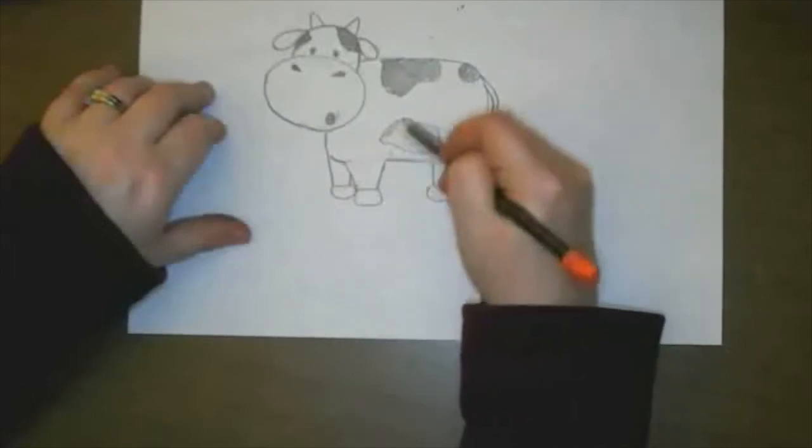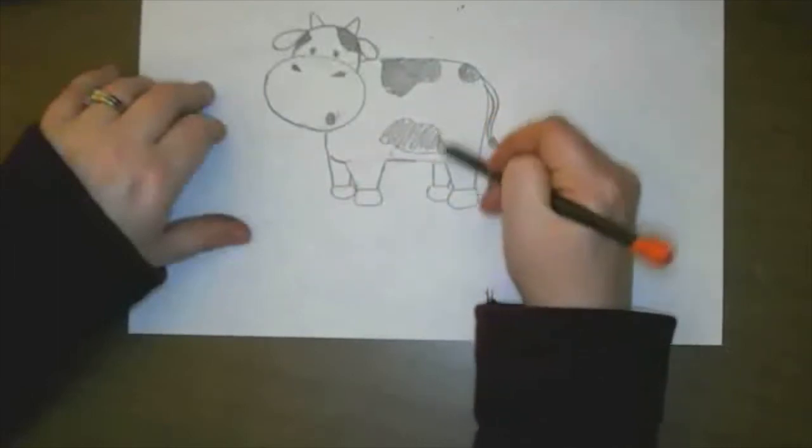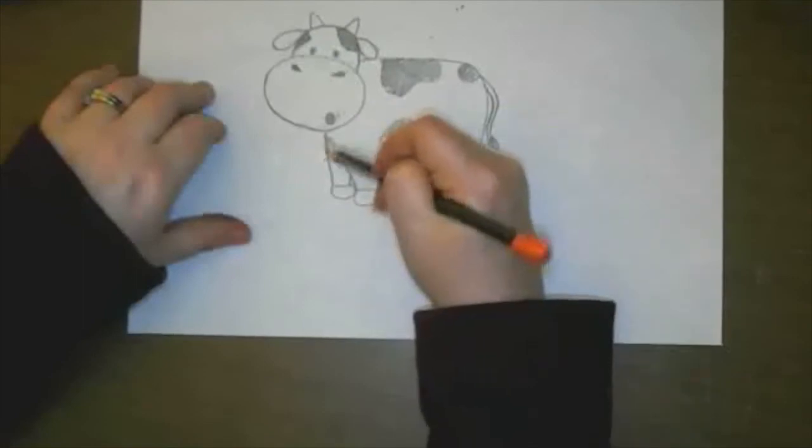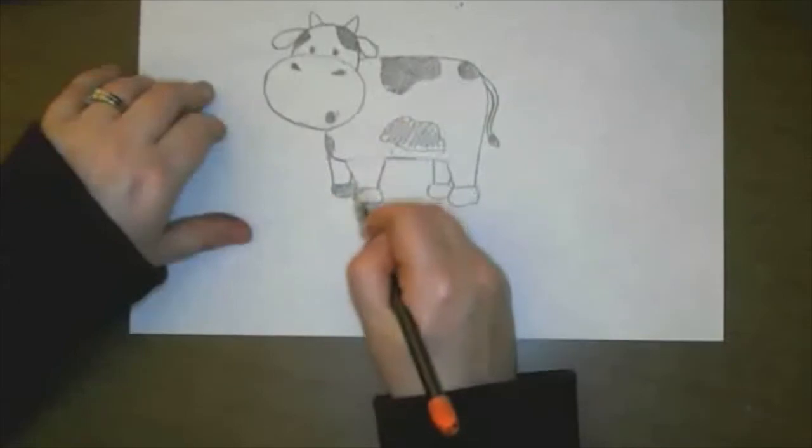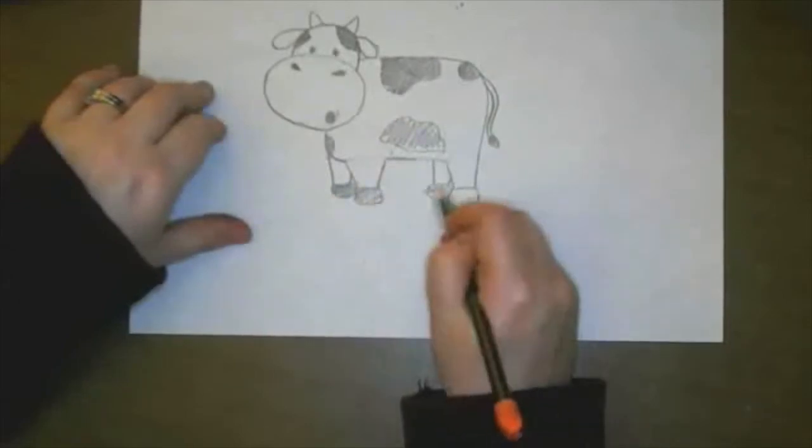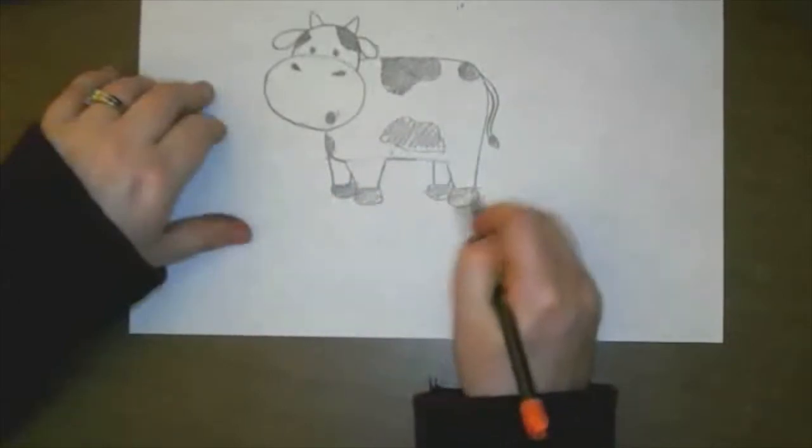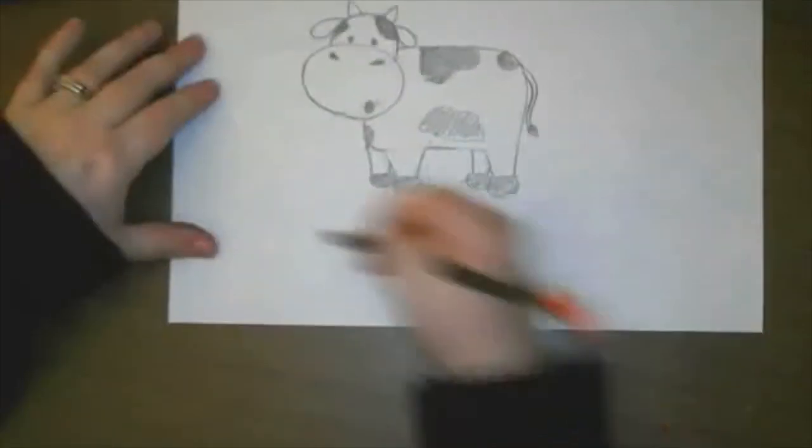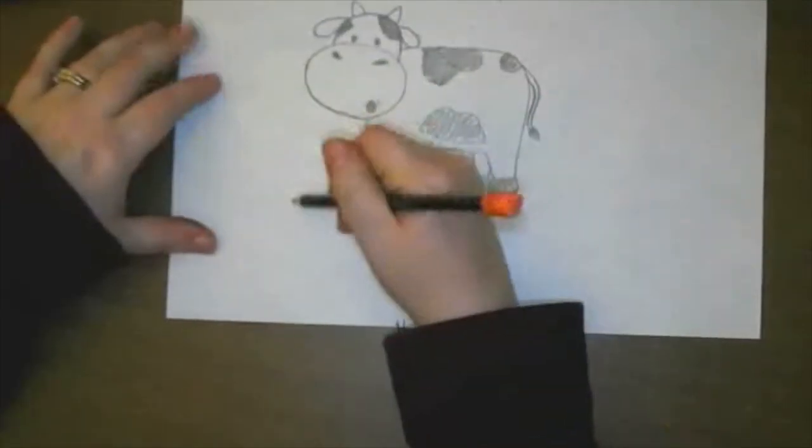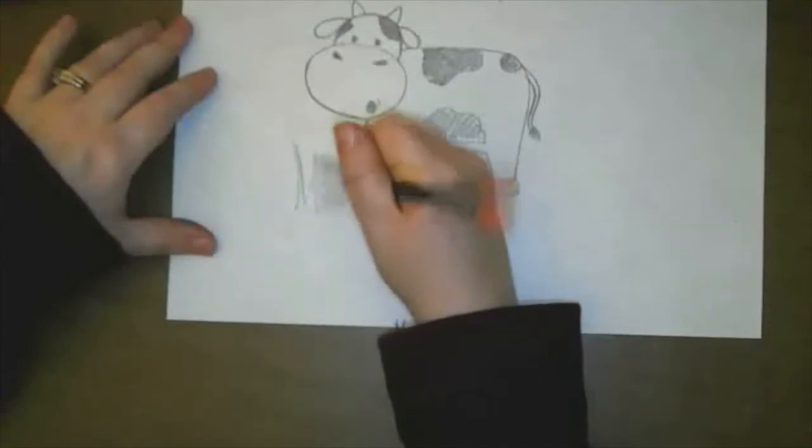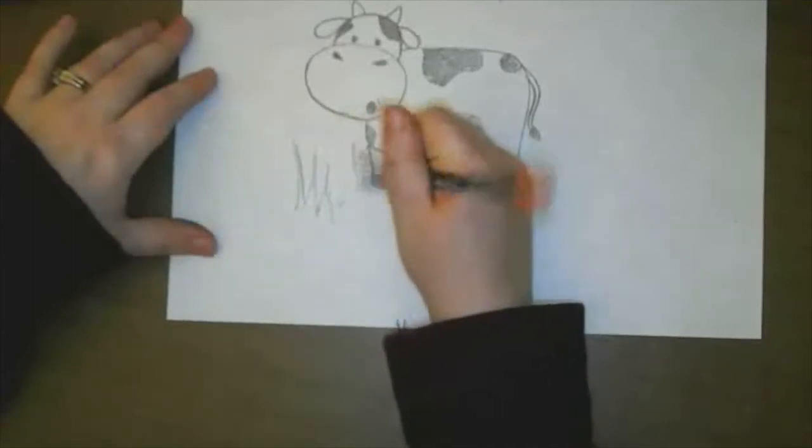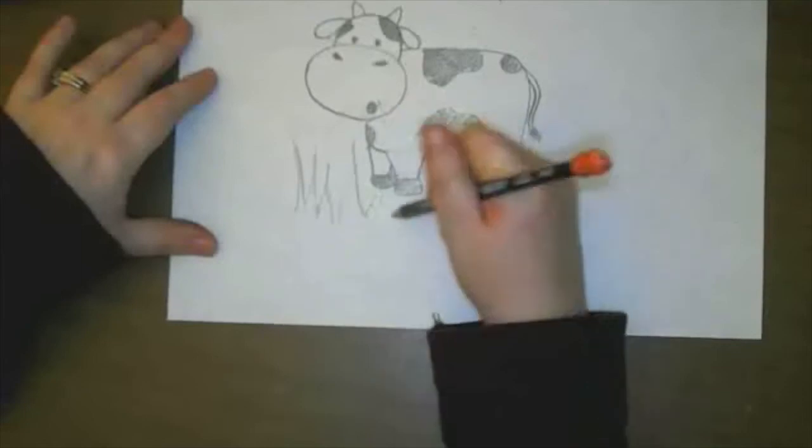Just put your spots wherever you like, finish them up, and you can decide how you want to finish up your little cartoon cow. I am going to finish mine up with some cartoon grass. Yeah, that would be cute, you can add a little bell and a cow bell.